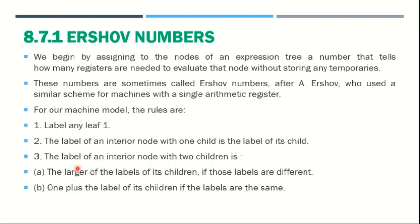The second rule: if there is any interior node having any child, their label value is also the child label value. If it has a single child, the label value is 1; if it has more than one child, the value is more than 1. The third rule: if the label of an interior node has two children which are different — one larger child and one shorter child.